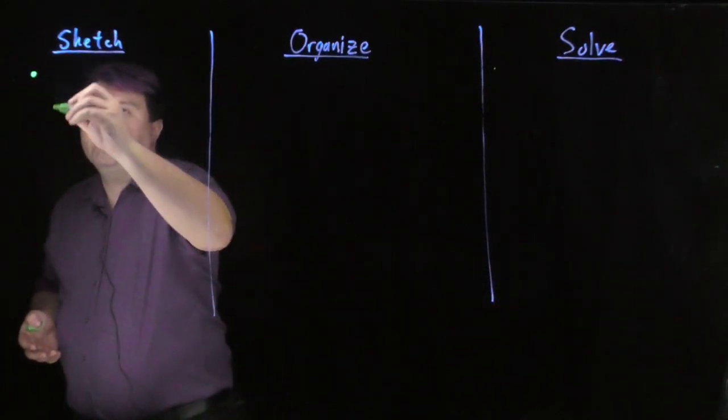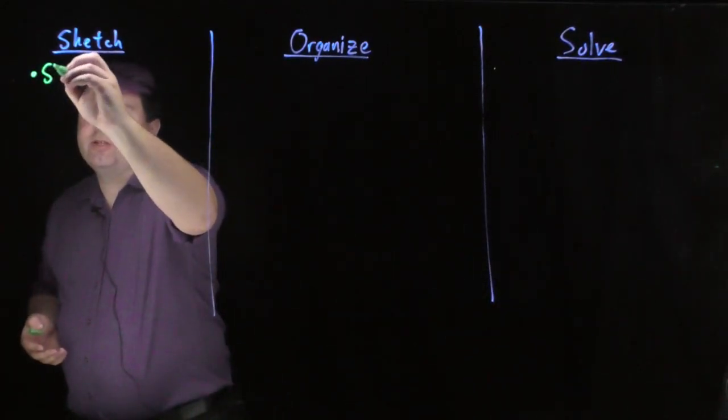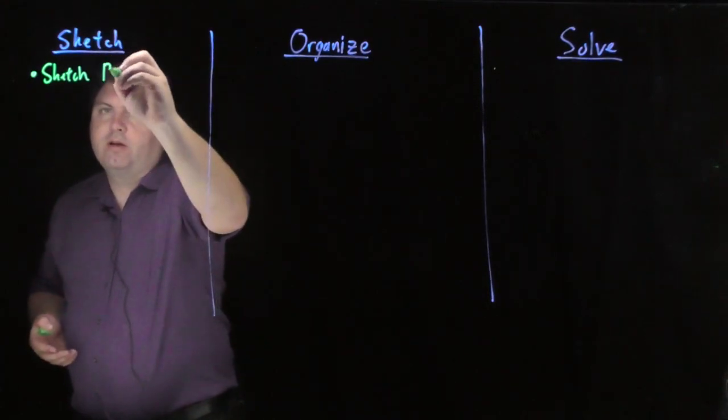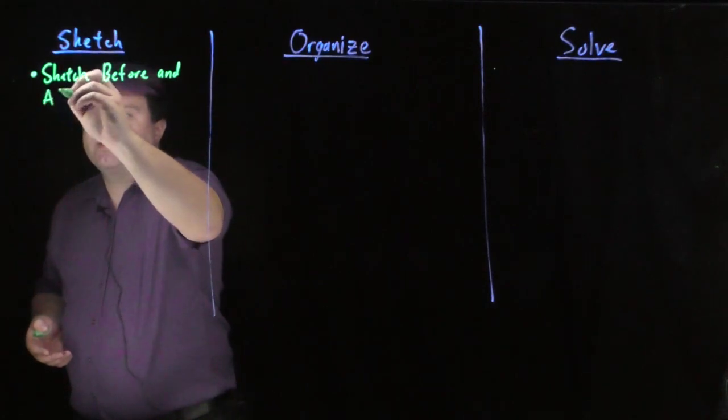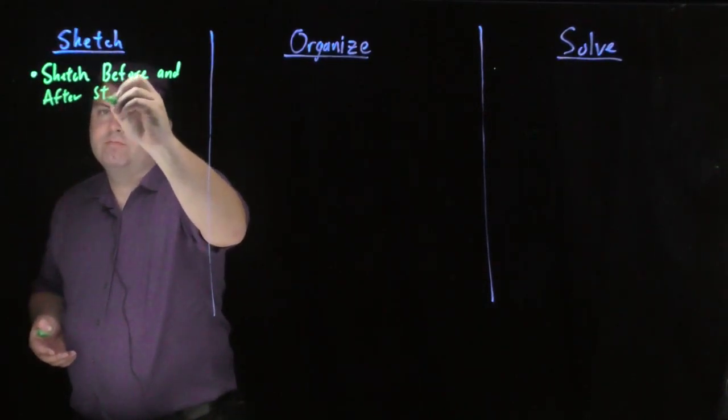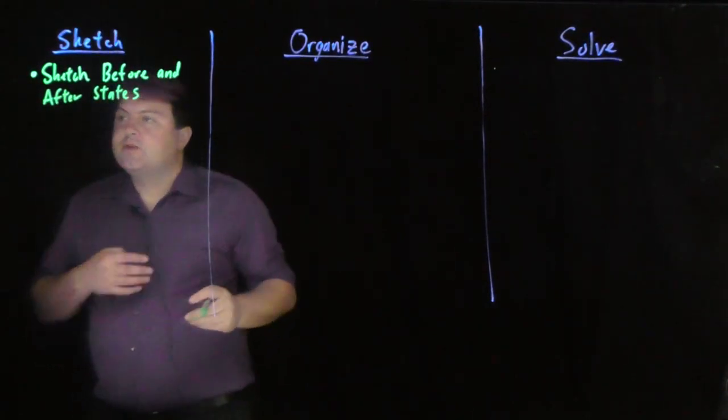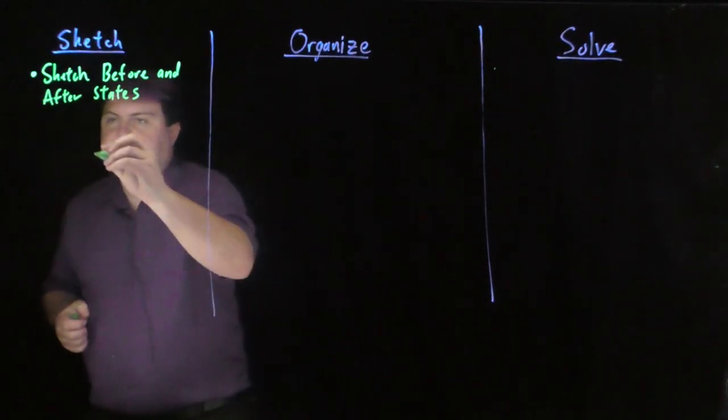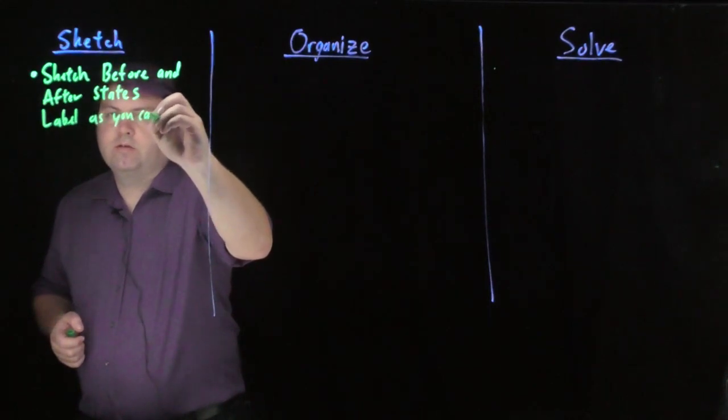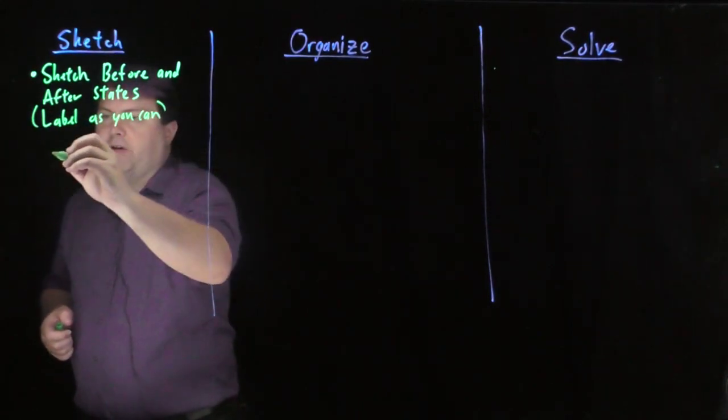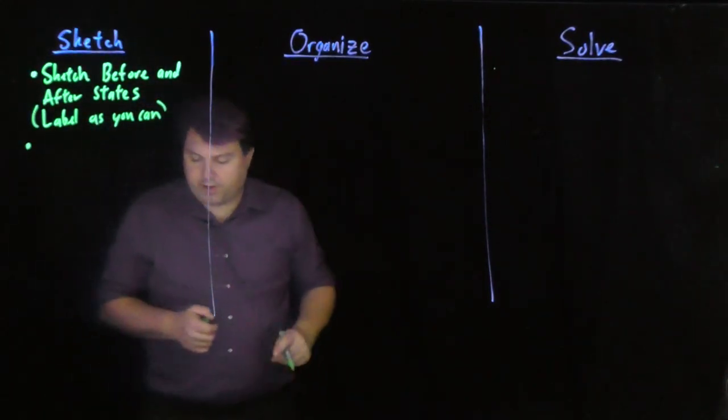So to help with that, when we start sketching things, we want to sketch the before and the after states so we can clearly label what's happening. Whatever we can label will help us quite a bit.